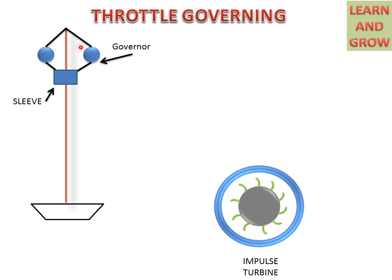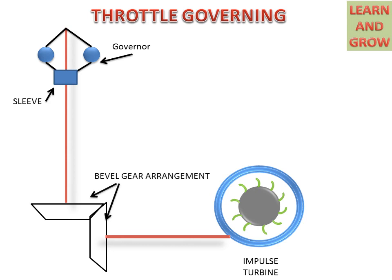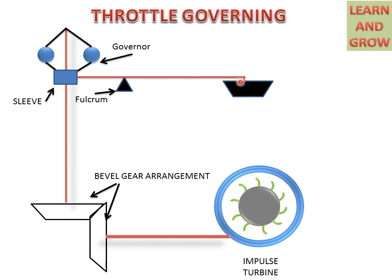The governor is connected with a shaft, and at the end of the shaft a bevel gear is connected. The turbine is also connected with a shaft and a bevel gear. This is the bevel gear arrangement for Throttle Governing. One end of the sleeve is connected to the valve. This is the fulcrum for the lever, and this is the main valve from which water will come and strike on the impulse turbine.